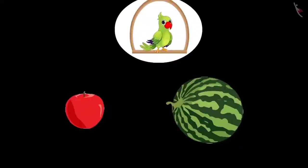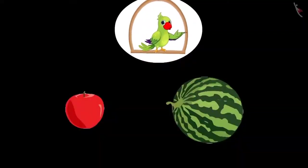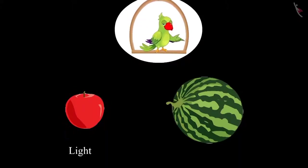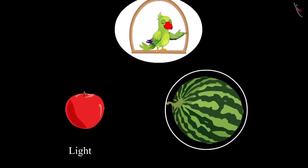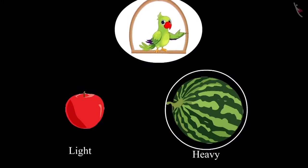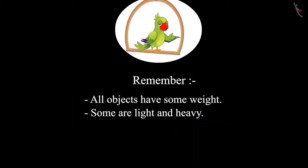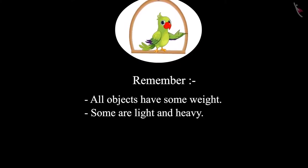Chotu says, 'Okay, Mummy.' So children, did you see? Chotu could pick up the apple because the apple was light. But he couldn't lift the watermelon because it was heavy. This means all objects have some weight — some are light and some are heavy.